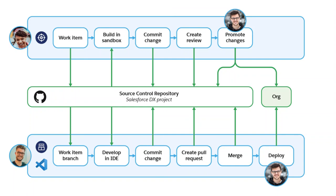Let's talk about the DevOps Center of Salesforce. This is the flow of DevOps: you create a work item, you build it in a sandbox, and you commit the change. Then you create a review and promote changes to the git source repository. After that, you create a work item branch, develop in your IDE, commit changes, create a pull request, and then merge and deploy.